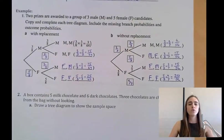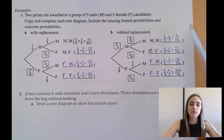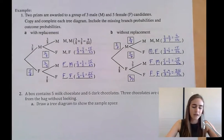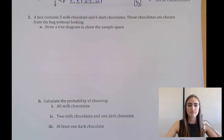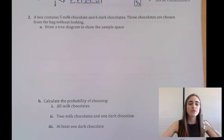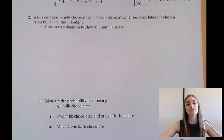It's really important to distinguish between with replacement and without replacement, because it tells us whether the second event is dependent on the first. Our second example is a little more complicated. We have a box of chocolates containing 5 milk chocolates and 6 dark chocolates, and 3 chocolates are chosen — so we have 3 stages instead of just 2.